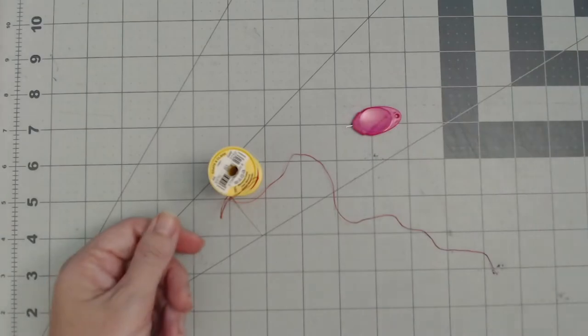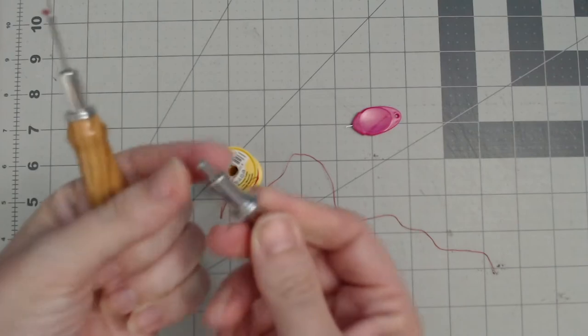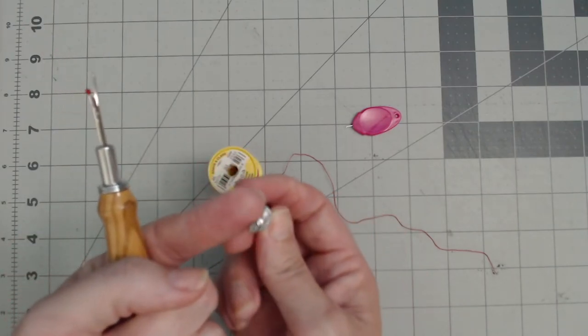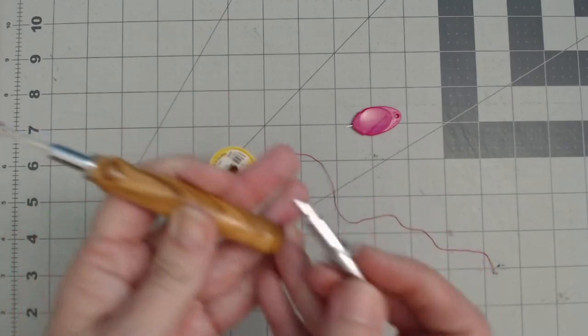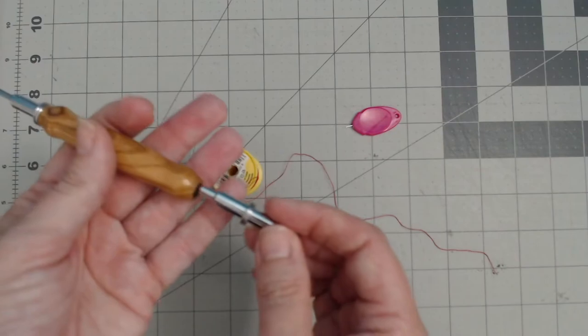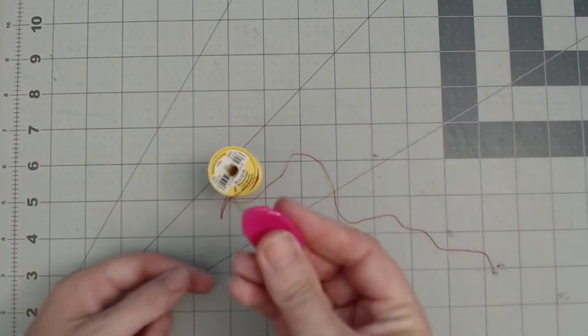Even on my seam ripper that had the needle threader in the other end that I received as a Christmas gift, I mean this thing probably wasn't cheap. The wire just popped right out when I was using it. So that's not something that's going to happen with this piece.